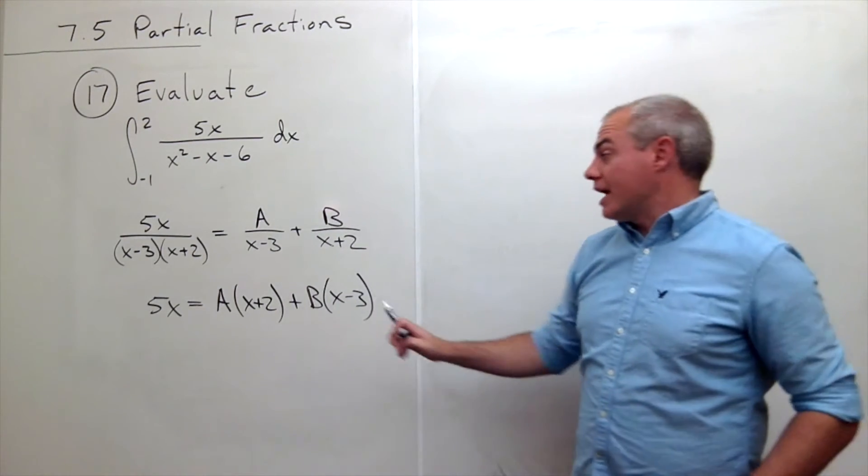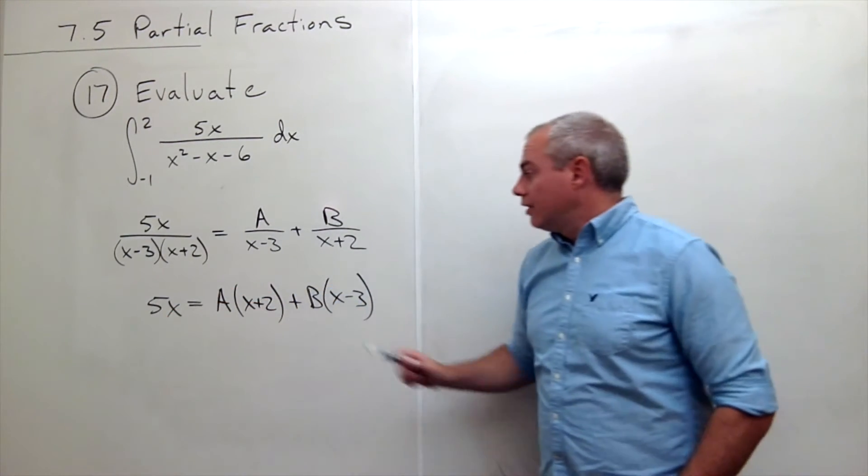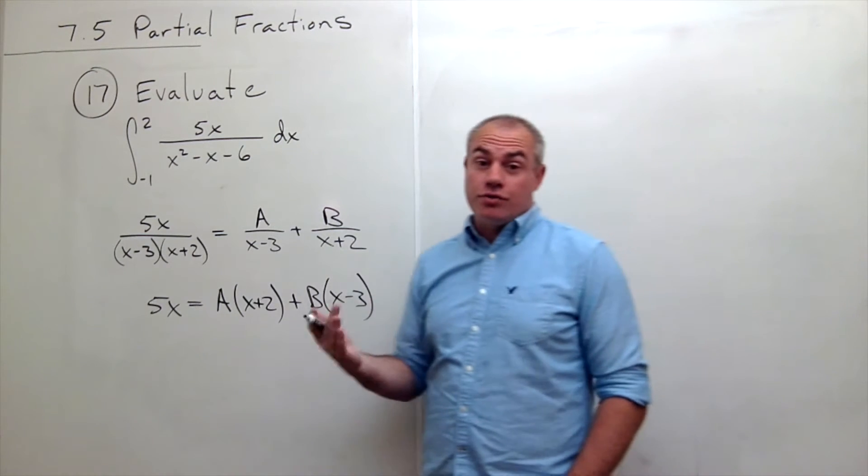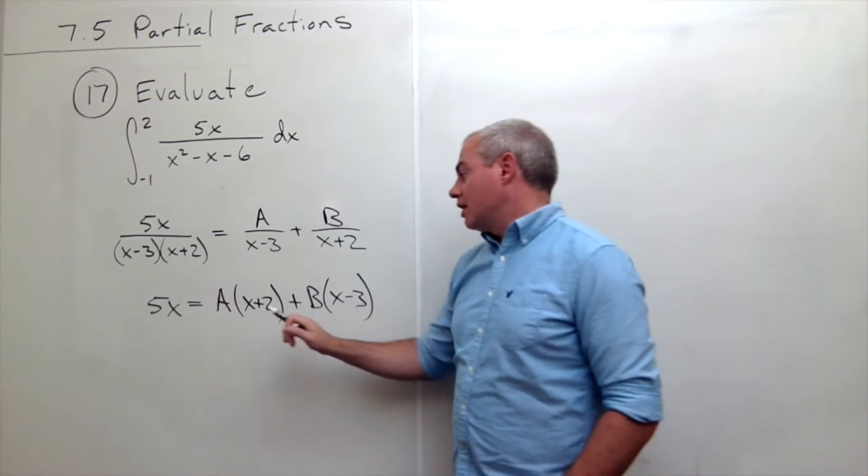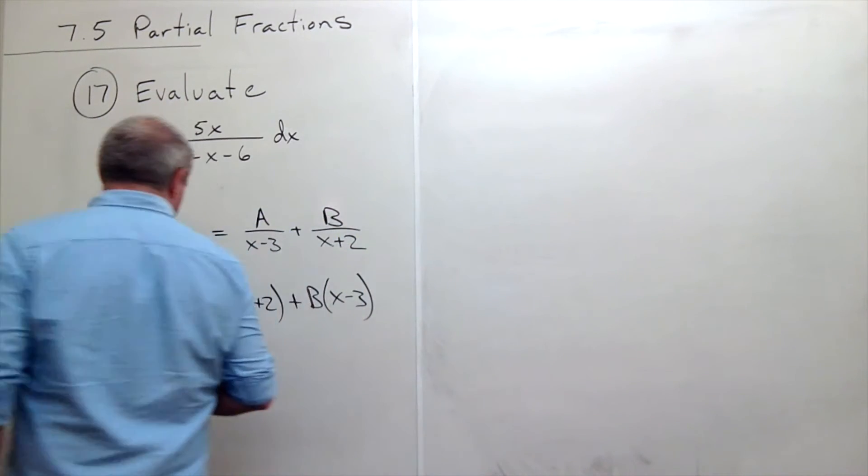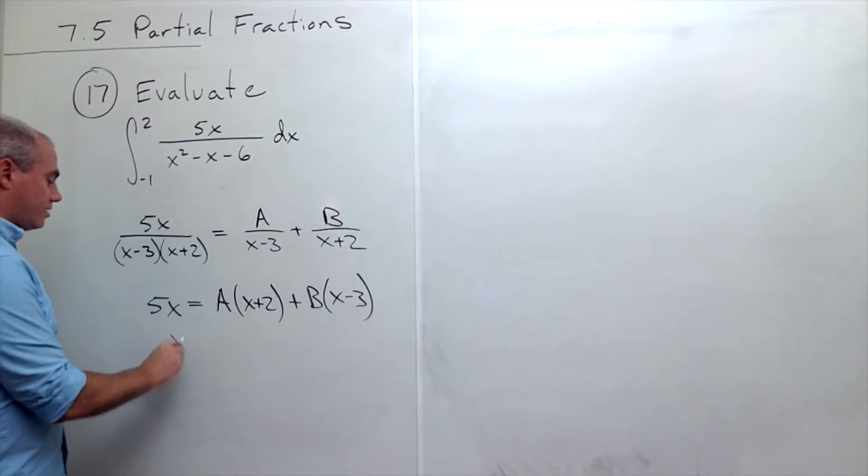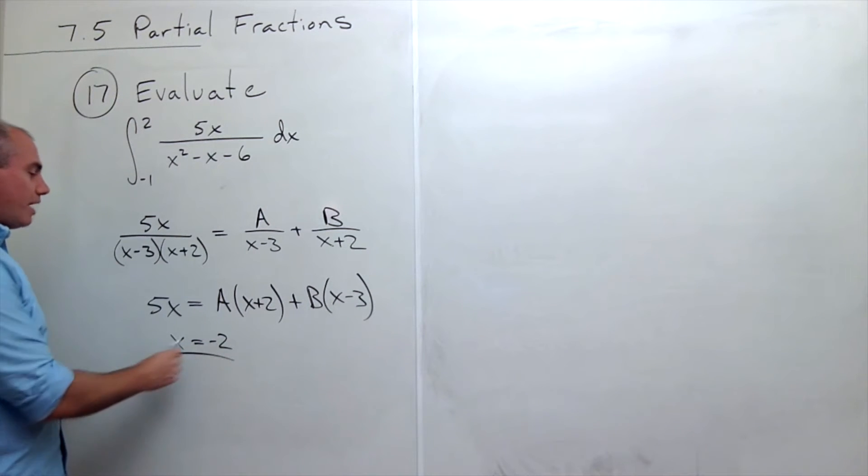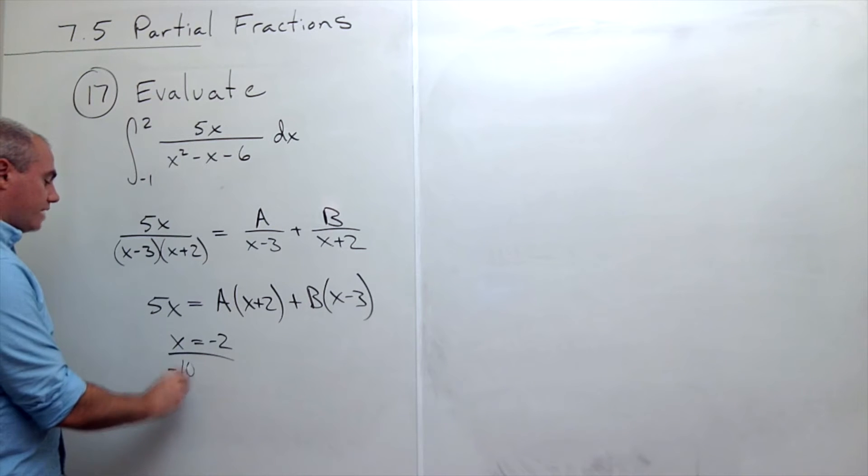Alright, so now we're ready to solve for the A and the B. First of all, let's choose some good values for x. A good value for x in this case might be that x is minus 2. If x is equal to minus 2, then this side gives me negative 10.